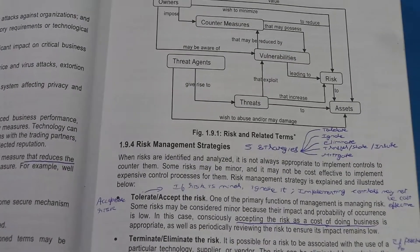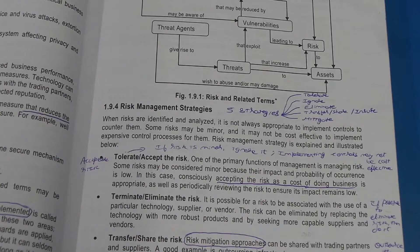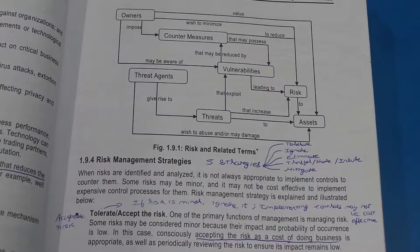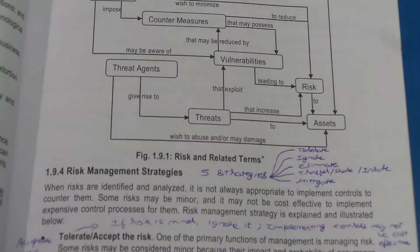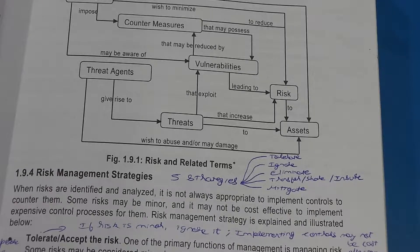Next we move on to risk management strategies. There are 5 strategies discussed here. The first strategy is to tolerate the risk — if the risk is minuscule or totally negligible in nature, you can tolerate it and just continue. The next is to ignore — where the risk is very minuscule and the likelihood of such an event is rare, you can entirely ignore it. Tolerate is where the impact is very minimal and you choose to just accept it as a cost and continue.